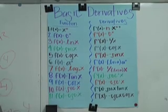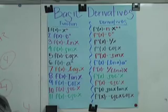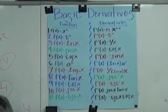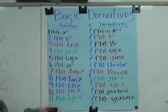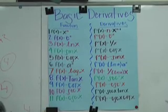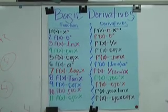Number eight is f(x) equals tangent x. And the prime is secant squared x. Number nine is f(x) equals cotangent x. The prime equals negative cosecant squared x.